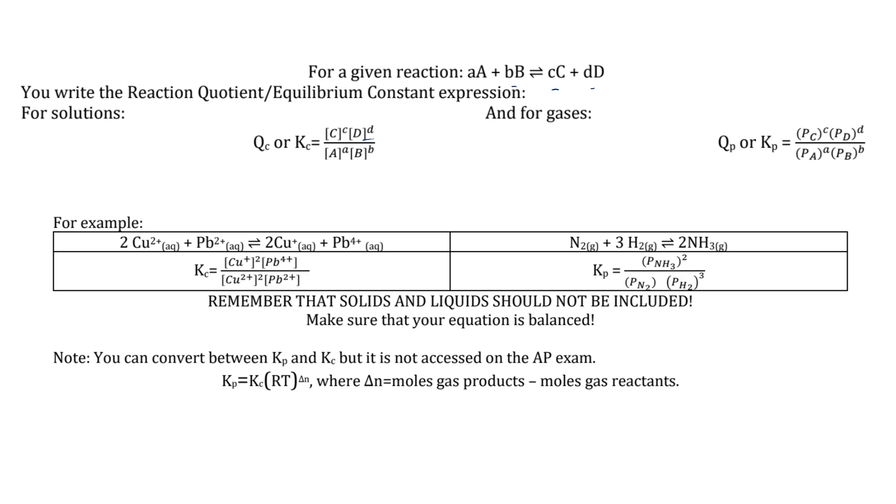Solids and liquids are not included. Make sure you are balanced, gentlemen. So N2 plus 3H2 in a reversible reaction with 2NH3. All of these are gases, so all these will be part of the equilibrium constant or reaction quotient. And so it's P sub NH3 squared over P sub N2 times P sub H2 cubed.